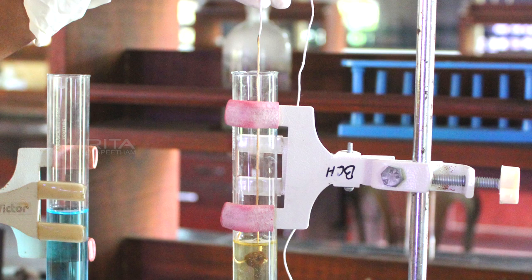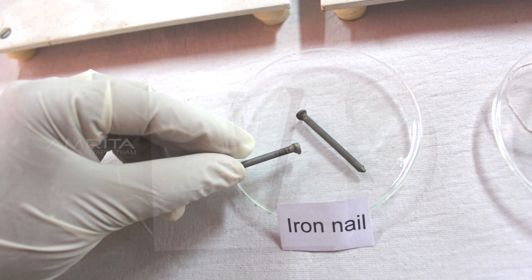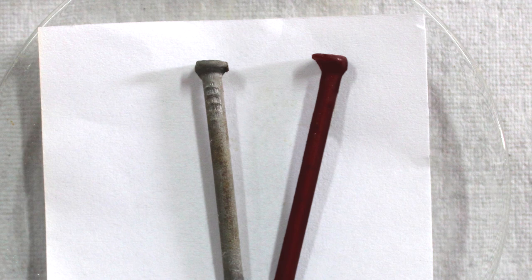Compare the two nails placed in the watch glass. The iron nail placed in the watch glass shows a greyish colour of iron, whereas the iron nail dipped in the copper sulphate solution shows a brown coating. This indicates that copper is deposited on the iron nail by displacing iron.